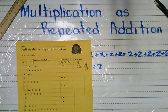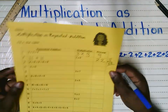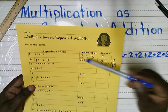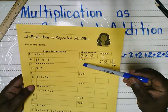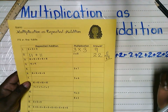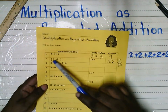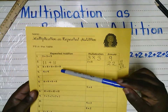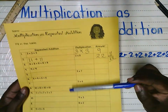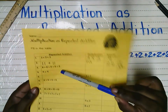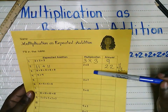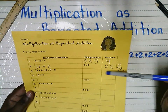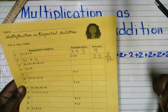I want you to notice something as well. Two times eleven is twenty-two, and if I switch it around and wrote eleven times two, it would still be twenty-two. So I have two groups and in each group there is eleven. That's what you're going to do for this particular worksheet — if you have the repeated addition, you write the multiplication number sentence, how many groups of which number, and then the answer.